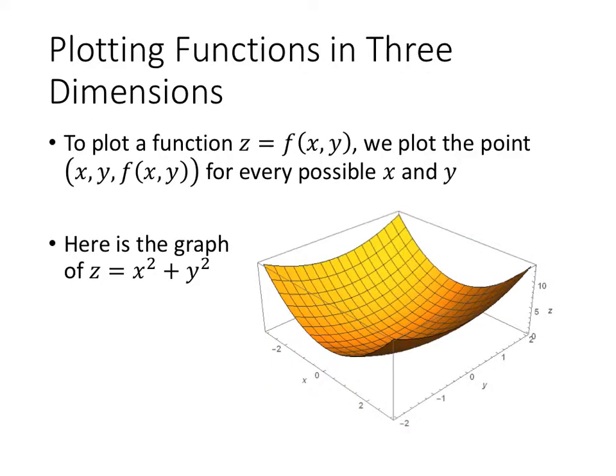So if we want to plot a function in three dimensions, all we have to do is take every possible pair of values x and y, plug them into our function, and then plot all of those points. When we do that, we get a picture that looks something like this, for the example z equals x squared plus y squared.